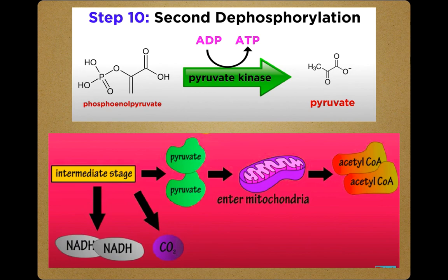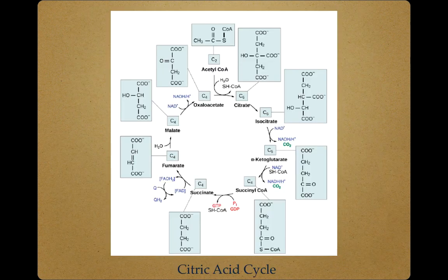The pyruvates produced have two pathways. If sufficient oxygen is available, they will enter the intermediate stage. If there is no sufficient oxygen, pyruvate is converted to lactate. At the intermediate stage, the pyruvates enter the mitochondria and are converted to acetyl-coenzyme A. Two molecules of NADH are produced and a CO₂ molecule is released. After the intermediate stage comes the citric acid cycle, which starts with a condensation step combining the two-carbon acetyl group with the four-carbon oxaloacetate molecule to form a six-carbon molecule of citrate.